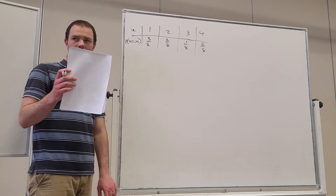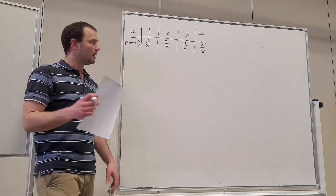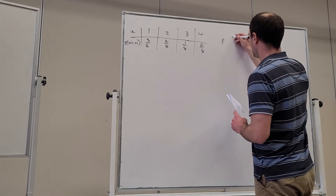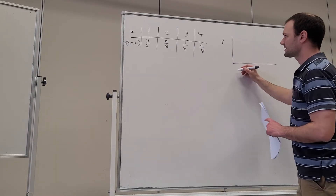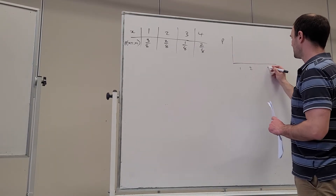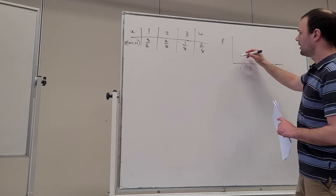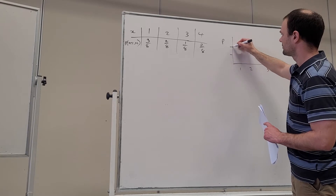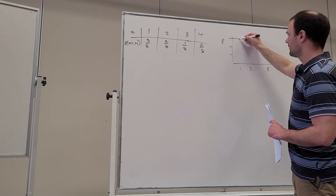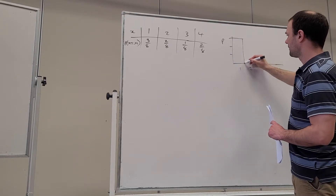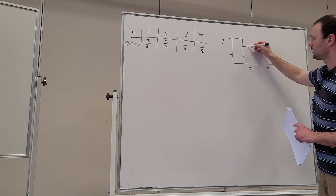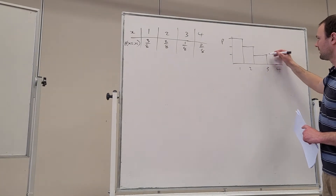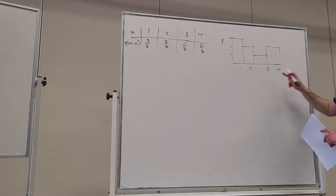Part B would be to draw a graph of it — a very quick graph where you have your probability on the y-axis and your events on the x-axis. So we've got events one, two, three, and four, and then let's go in eighths: 1/8, 2/8, 3/8. Event one had a probability of 3/8, event two had 2/8, event three had 1/8, and event four had 2/8.